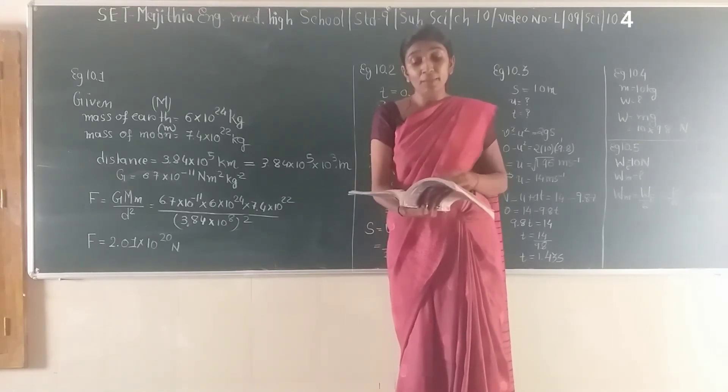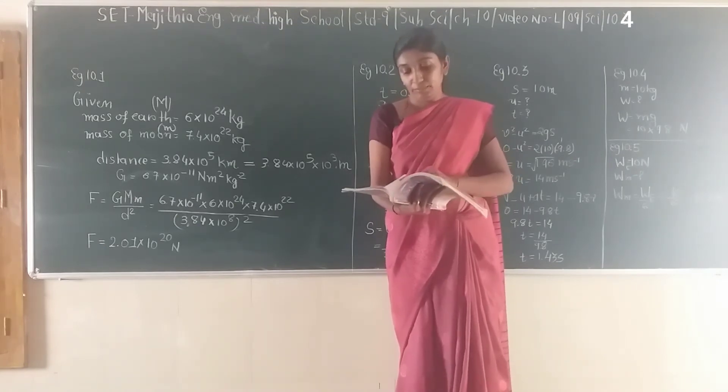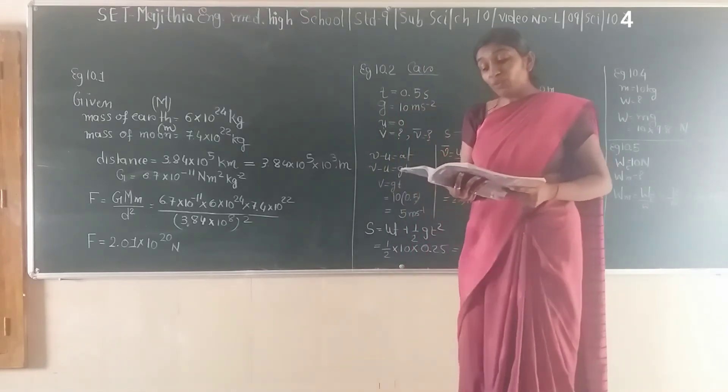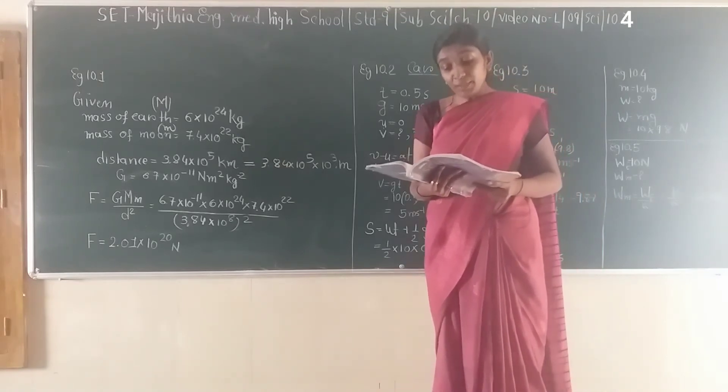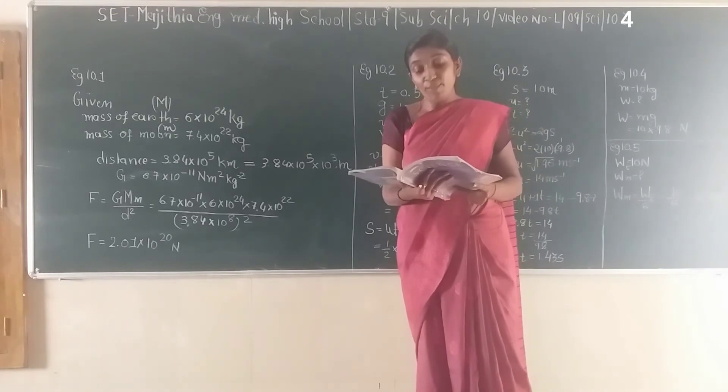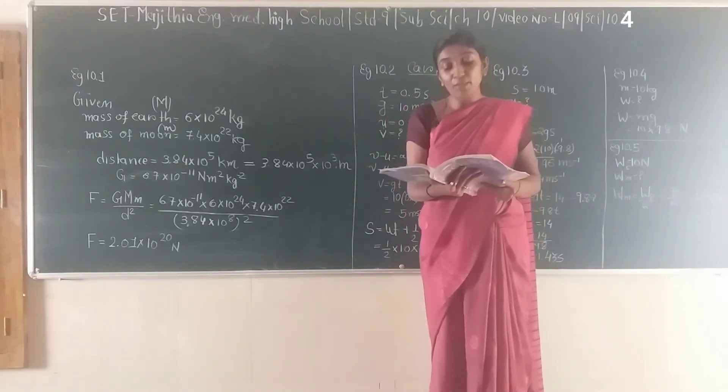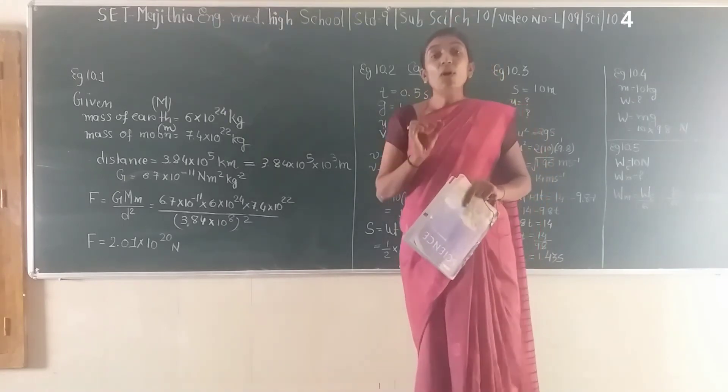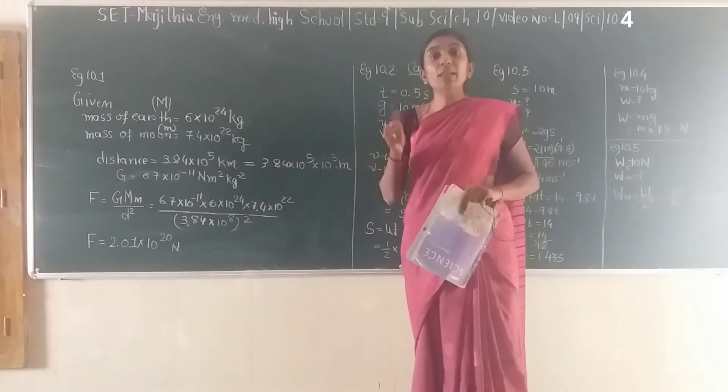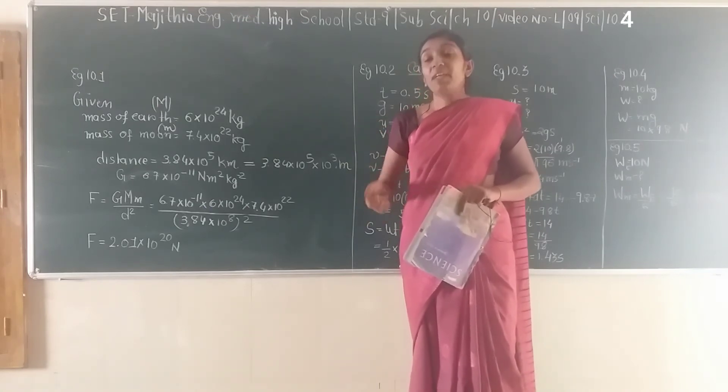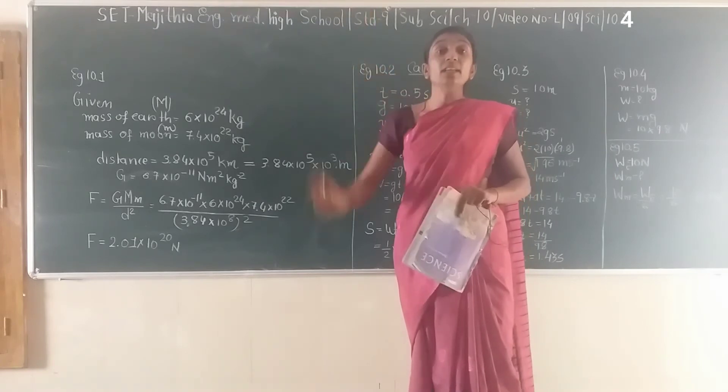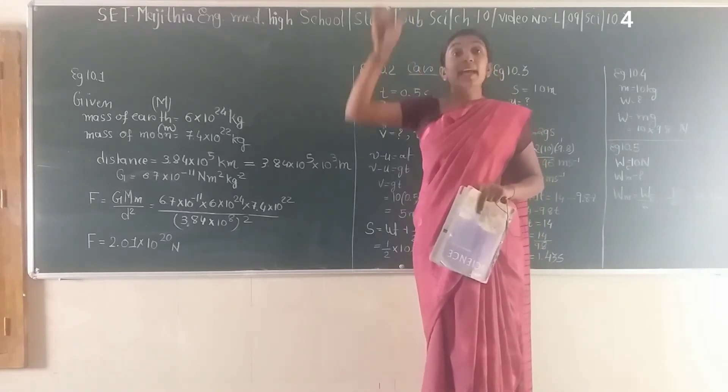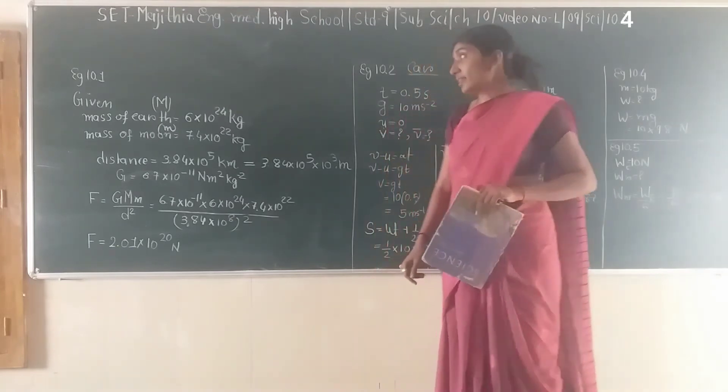Next is example number 10.3 on page 136. An object is thrown vertically upward and rises to a height of 10 meters. Calculate the velocity with which the object was thrown upwards and the time taken by the object to reach the highest point. You should understand that when you apply force onto an object, it reaches a certain height, and its speed gradually decreases to zero, then it starts moving in the opposite direction.